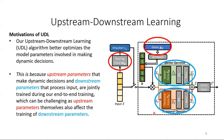Next, to further improve the performance of our DSDS module, we designed an upstream-downstream learning algorithm that better optimises the model parameters involved in making dynamic decisions. This is because upstream parameters, indicated in red, that make dynamic decisions, and downstream parameters, which process input, are jointly trained during our end-to-end training, which can be challenging, as upstream parameters themselves also affect the training of downstream parameters. Essentially, our upstream-downstream learning algorithm leverages meta-learning to optimise the upstream parameters while taking their downstream effects into account.